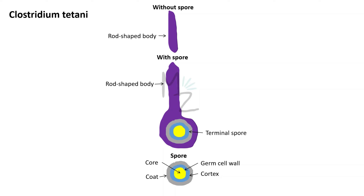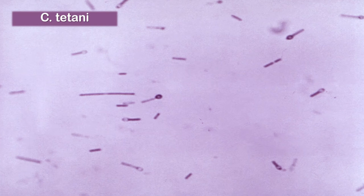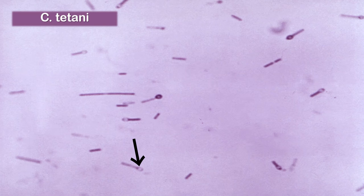The spore form is produced in unfavorable conditions and has several layers: the coat on the outside, then the cortex, the germ cell wall, and the core innermost. Under the microscope, Clostridium tetani appears purple and rod shaped; the drumstick or tennis racket form shows the bacterium converting into a spore, and circular opacities seen under the microscope always refer to spores.